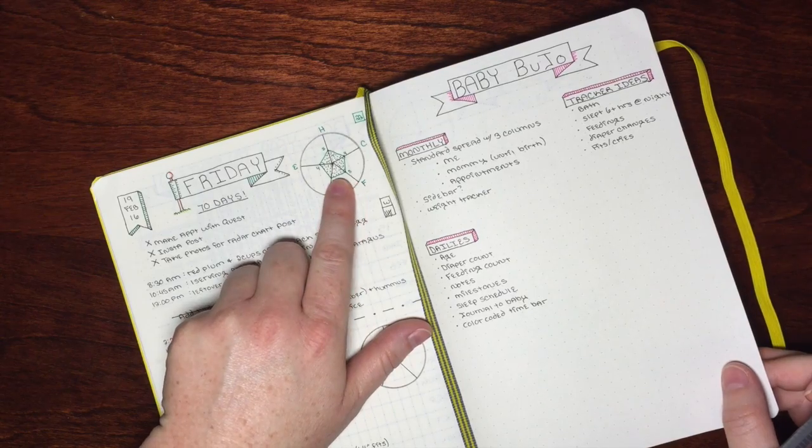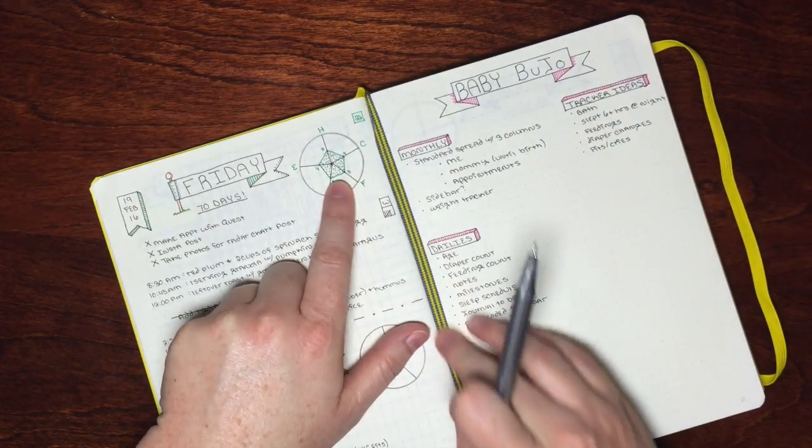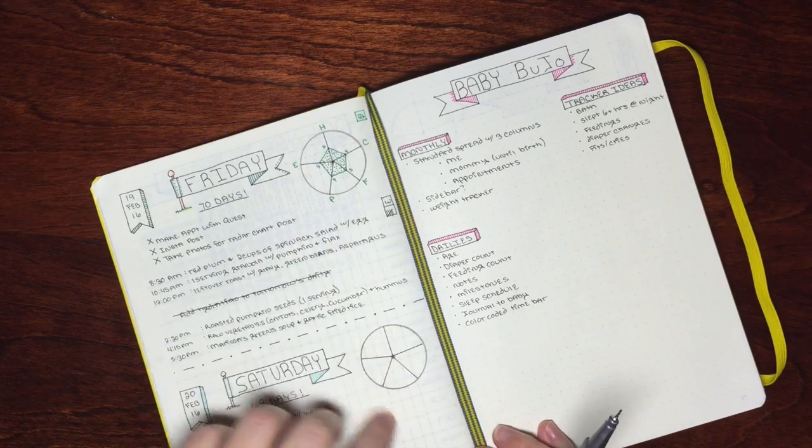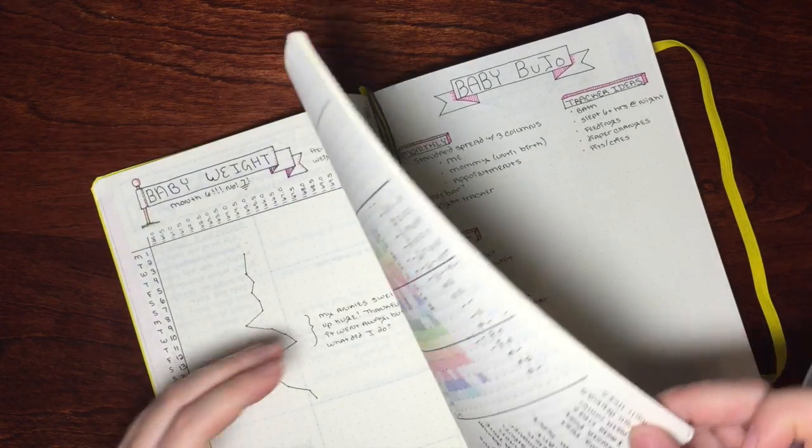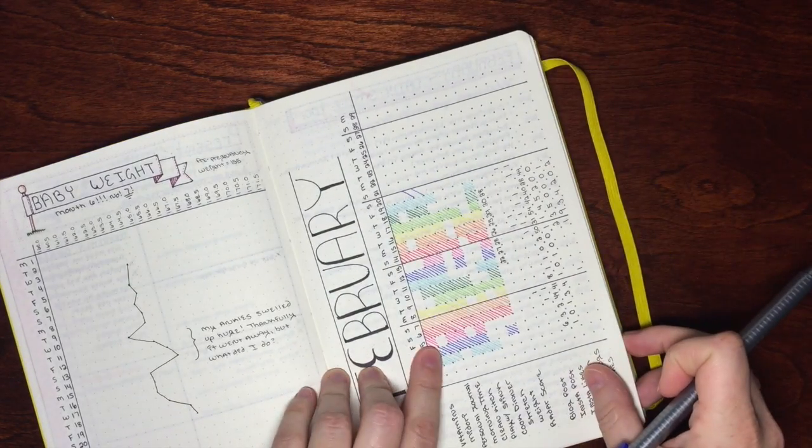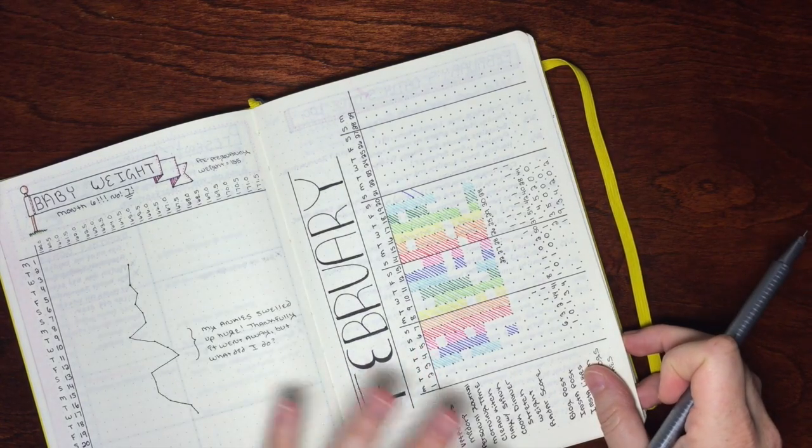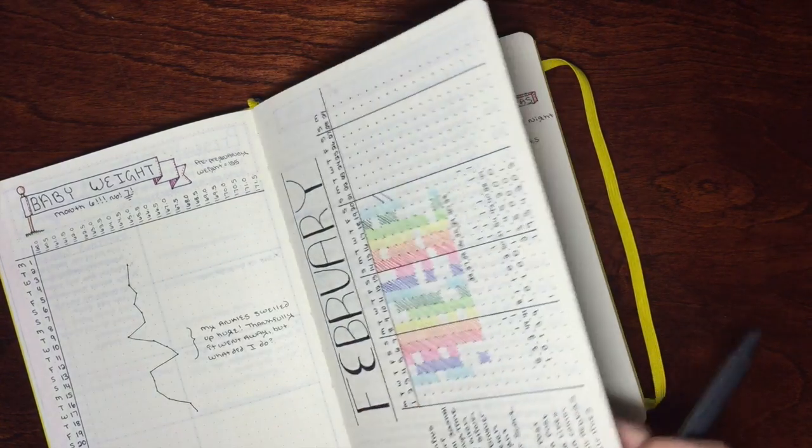I'll use the same color in my radar chart so that I have some consistency. And I also like to use that same color in my tracker so that I have consistency throughout the bullet journal.